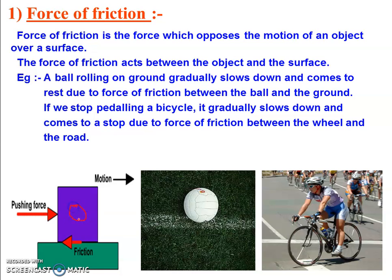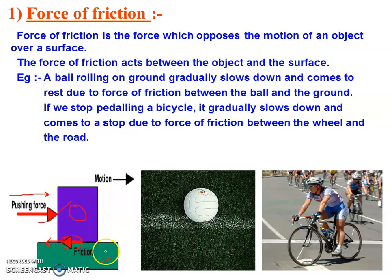There is an object which is placed on the surface of another object. When we push it from left to right, an opposing force at the surface in contact will come into play. This opposing force will try to oppose the motion of the body. So this opposing force is called Force of Friction, or Friction.